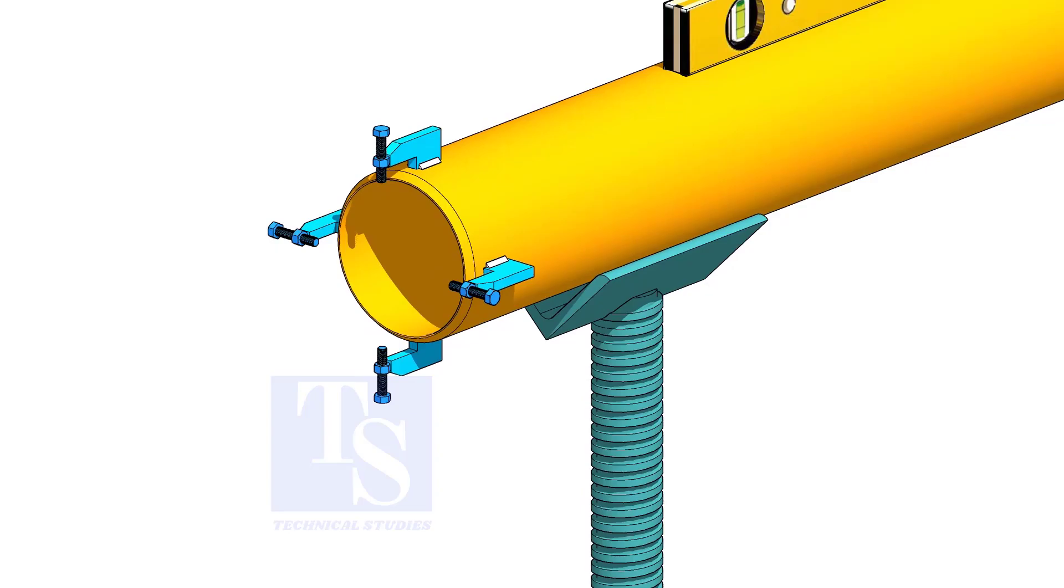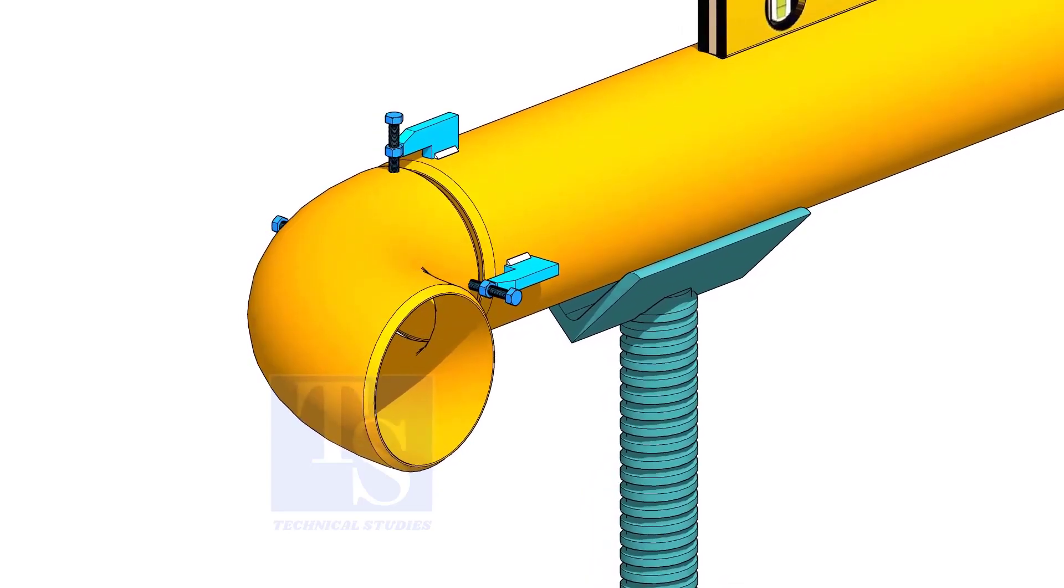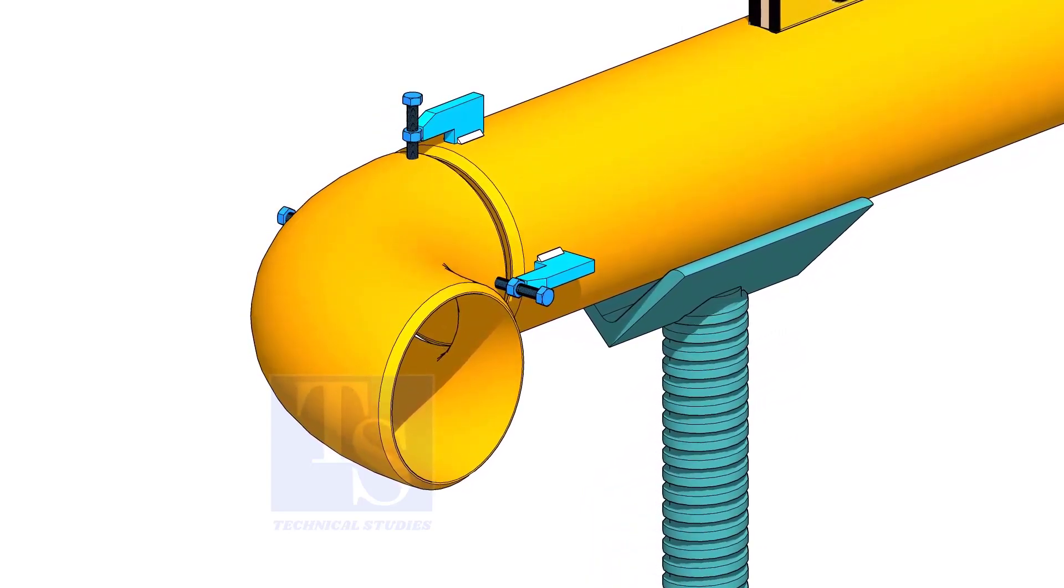Fix the clamps on the pipe. Put the elbow and the gap rod and slightly tighten the clamp bolts.